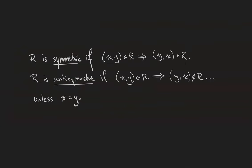R is symmetric if every pair in the relation may be inverted. In other words, if (x,y) is in the relation, so is the pair (y,x).